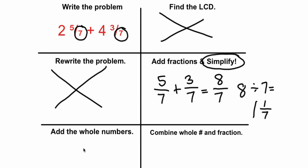Okay so now here's a new box. It says add the whole numbers. So we're going to go through and find all the whole numbers in this problem. We have a two. We have a four. And now after we've simplified over here we have a one. So two plus four plus one is seven.